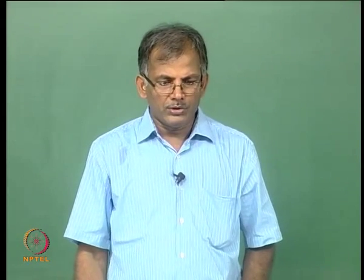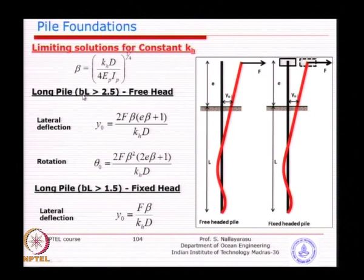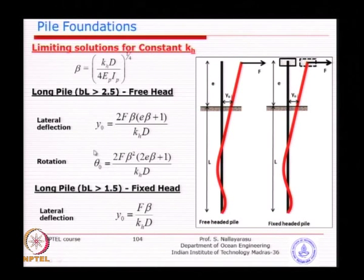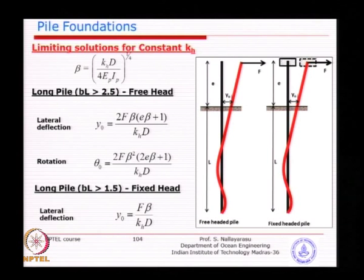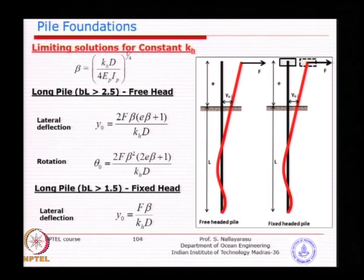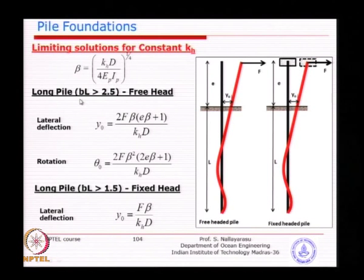The parameter beta tells us whether the pile is behaving as a short pile or long pile. Long pile when beta times L is greater than 2.5 for free head, and greater than 1.5 for fixed head. So when beta multiplied by the pile embedded length exceeds 2.5, it is called a long pile for free head. The reason we need beta is to find the relative flexibility or rigidity of the pile to classify it and apply corresponding limitations.